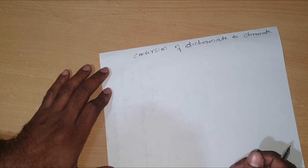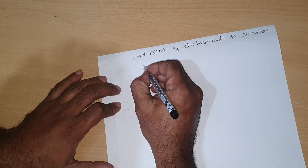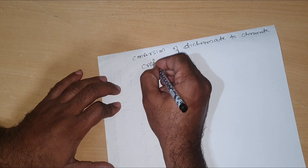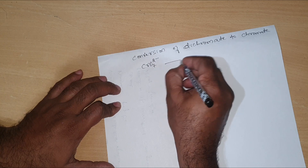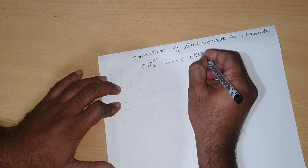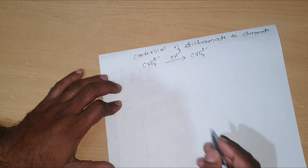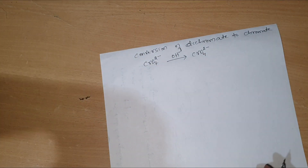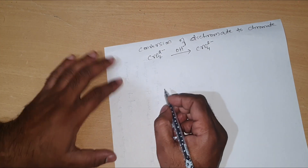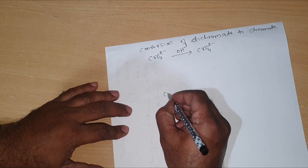Now we will discuss how the conversion of dichromate to chromate will happen. Dichromate has the ionic formula Cr2O7²⁻, and it gets converted to chromate, CrO4²⁻. This will happen in the presence of a base — you have to add a base in order to convert dichromate to chromate.